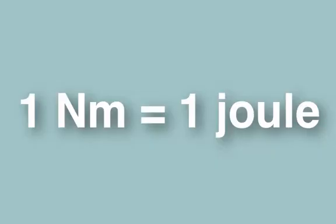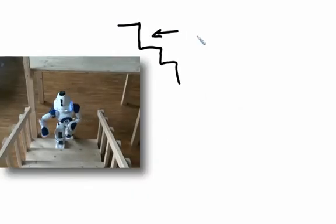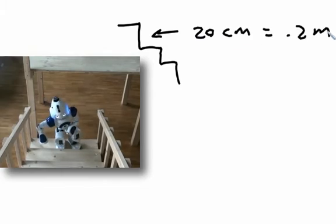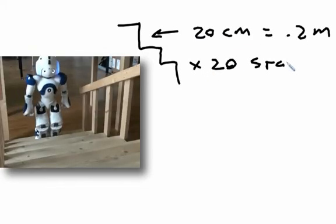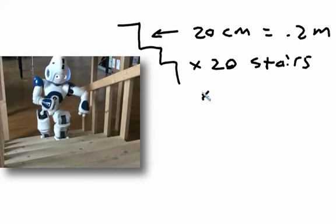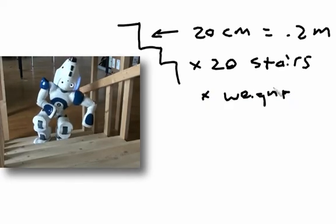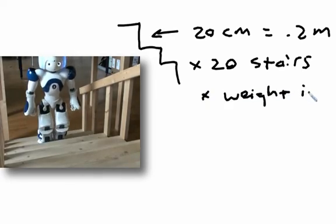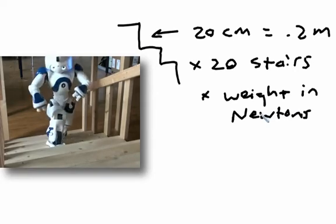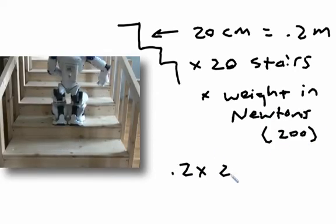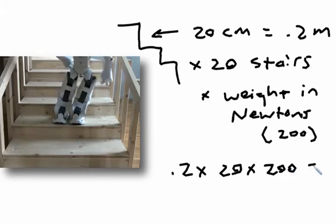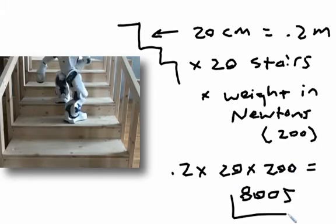If you want to find out how much work you did when you climbed 20 stairs 20 centimeters high and your weight was 200 newtons, the calculation would be 2 tenths of a meter. This comes from 20 centimeter stair height times 20 because there's 20 stairs times 200 because your weight is the force you're moving equals 800 joules of work.